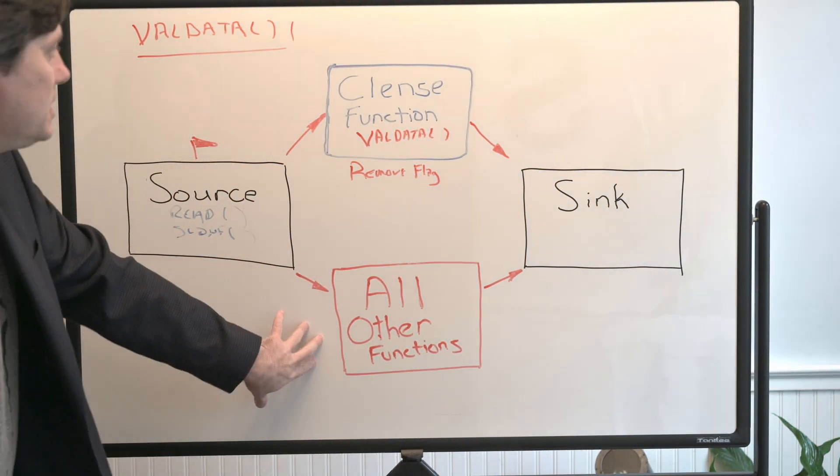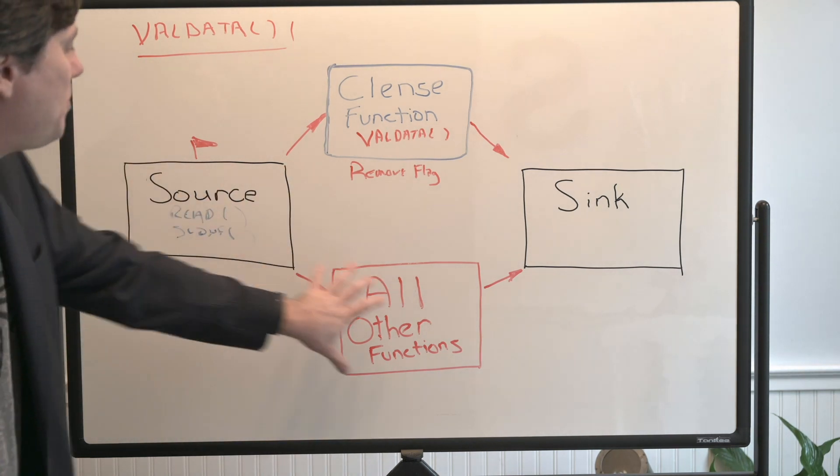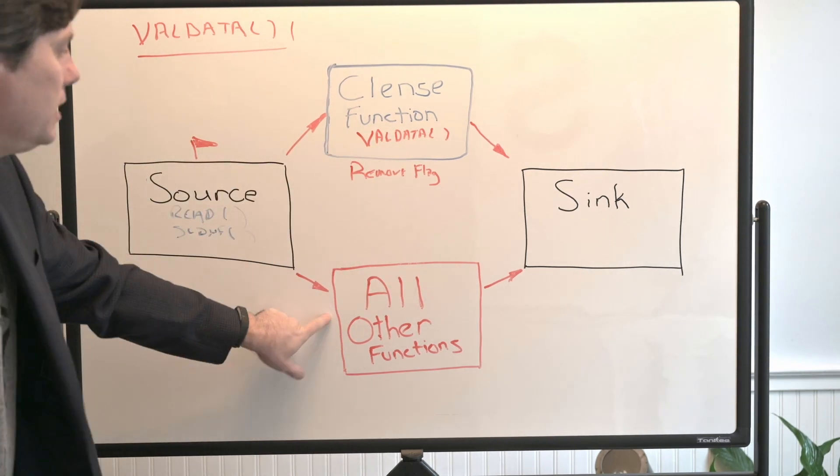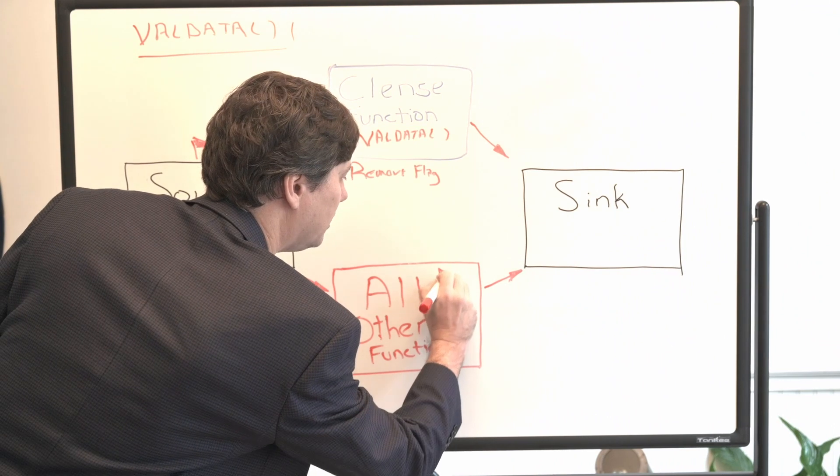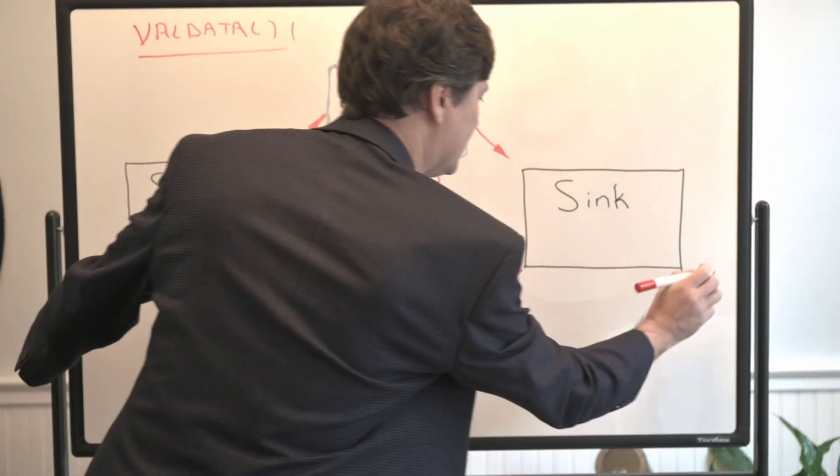Now we've told the data flow analyzer what our cleanse function is. So the data flow analyzer, when it sees the source, read, scanf, it puts that taint flag on there. If the data flow analyzer sees the data flow through the cleanse function, it removes the taint.